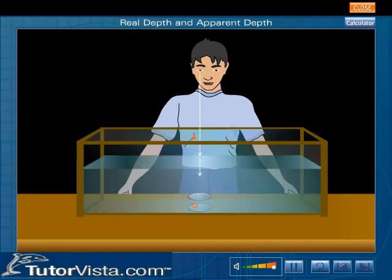A ray of light AO incident normally is refracted from O along the same path. For this ray, angle of incidence is zero and therefore angle of refraction is zero.